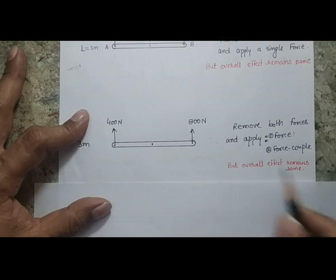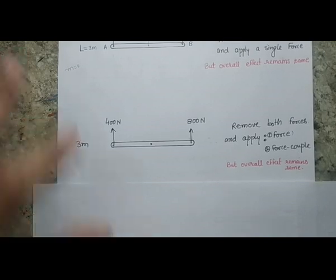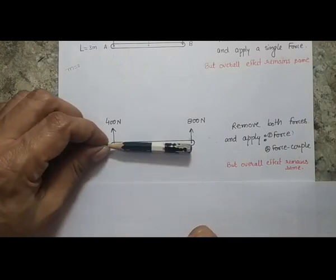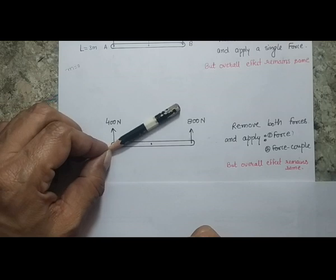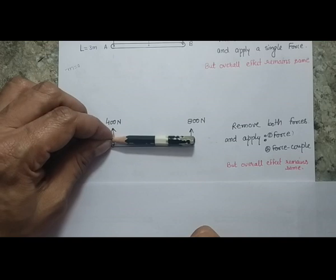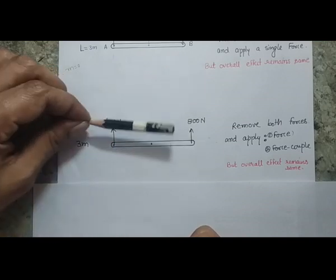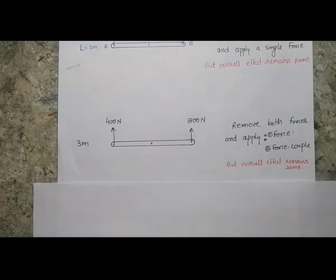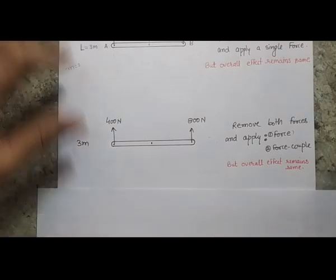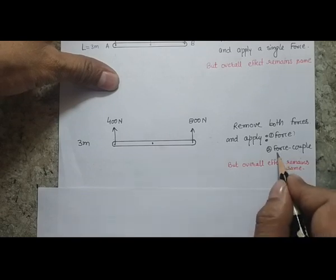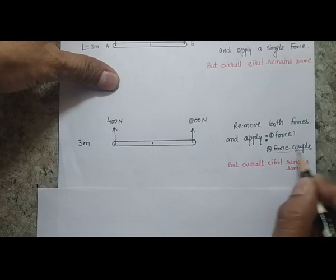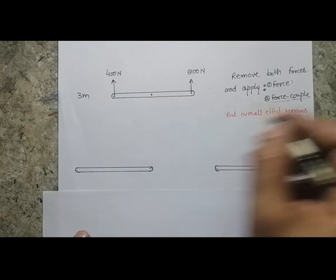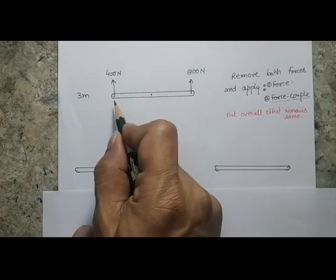The overall effect must remain the same. If I visualize the system, as both forces are not of equal magnitude, the larger force will try to rotate the bar. At the same time the bar is in space, so it will move in one direction as well as rotate — the net motion will be both translation and rotation. So in my system there are two effects: linear motion as well as rotation. Now let's find an equivalent force or an equivalent force couple system.